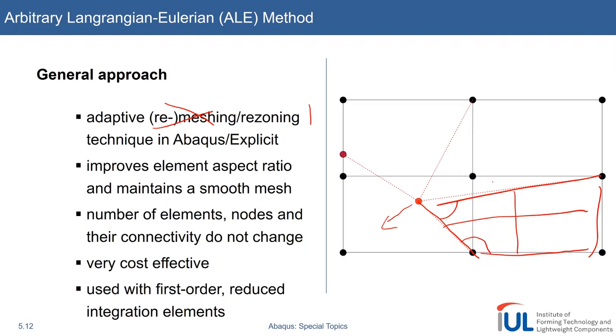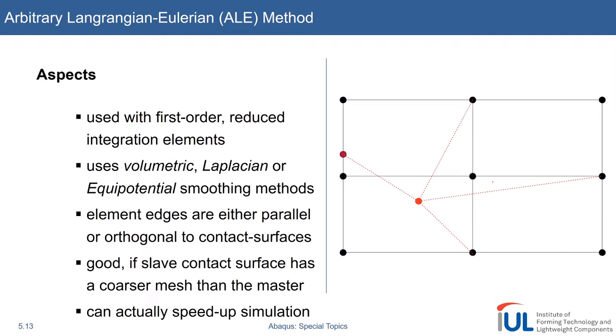It only works with first-order reduced integration elements, which is, as you, I hope you remember, kind of like the default in Abaqus by now. And, yeah, as I said, use first-order reduced integration elements. And there are different smoothing methods, so that basically tell you how this point is moved, for example, back to the best possible way over time. Some fancy math goes into it. Usually you don't have to deal with this kind of options, just stick to the default.